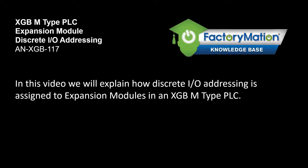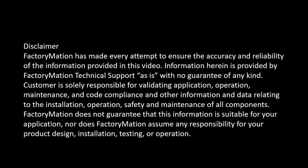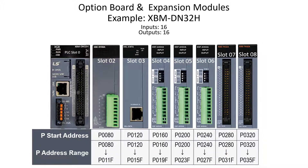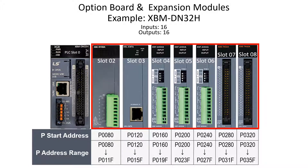In this video we will explain how discrete I/O addressing is assigned to expansion modules in an XGB M-type PLC. In the XGB PLCs, all discrete I/O addressing is designated with the letter P. We will be looking at how the P addressing is assigned to expansion modules and how the discrete I/O is addressed. The LS M-type PLC can be configured with expansion modules for increased I/O and enhanced functionality.